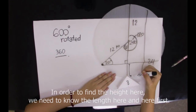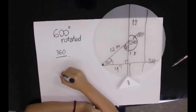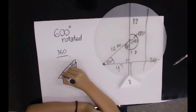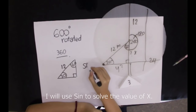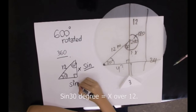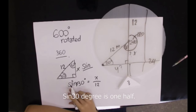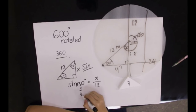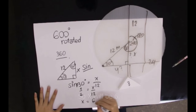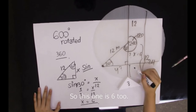In order to find the height here, we need to know x and y first. I will let this be x and this be y. I will use sine to solve the value of x. sin 30 degrees equals x over 12. sin 30 degrees is 1 half, and this one is x over 12, so x will be 6. If this one is 6 and the radius is 12, then this one is 6 too.